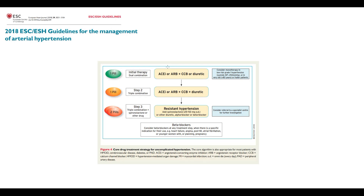Here is a classical approach to treatment of hypertension. Initially, we prescribe one of the renin-angiotensin-aldosterone system inhibitors, usually an ACE inhibitor, combined with either a calcium channel blocker or a thiazide diuretic. If this does not help, we prescribe an ACE inhibitor or ARB combined with both a calcium channel blocker and a diuretic. If hypertension is resistant, we add additional agents — usually spironolactone, which is a potassium-sparing diuretic, or an alpha blocker or beta blocker.